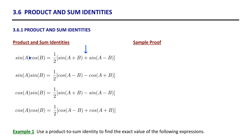We have quite a variety of product and sum identities. Notice we have the product of sine and cosine, sine and sine, cosine and sine, and cosine and cosine — so there's a lot of different varieties of products that we could break into sums. Let me show you just how to derive one of these identities, since they stem from identities you already know.